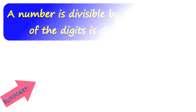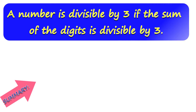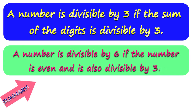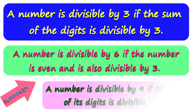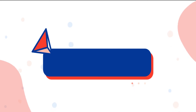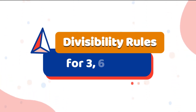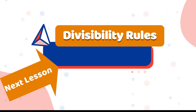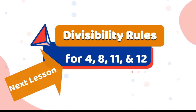Let's remember the three rules we learned today. A number is divisible by 3 if the sum of the digits is divisible by 3. A number is divisible by 6 if the number is even and is also divisible by 3. A number is divisible by 9 if the sum of its digits is divisible by 9. That ends our lesson about divisibility rules for 3, 6, and 9. Our next lesson is about divisibility rules for 4, 8, 11, and 12.